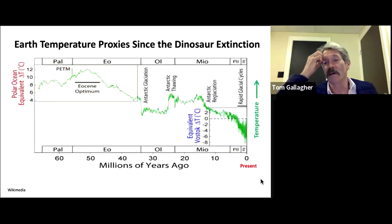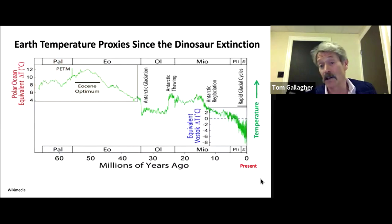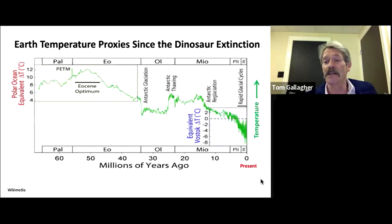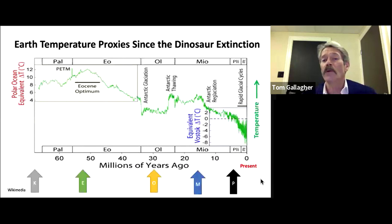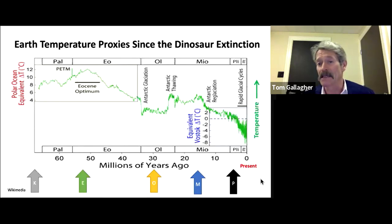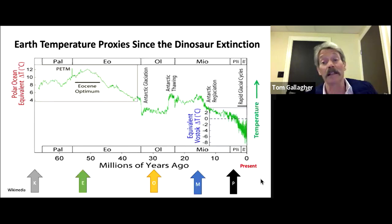Now let's focus on a period of time that spans between the death of the dinosaurs, 65 million years ago, and today. The graph, the green line, shows a total temperature fall of about 18 degrees Celsius during this period. This temperature fall is documented using fossil, isotopic, and ice core information. Note again some critical time periods: K, E, O, M, and P. We will address the relationship of temperature and polar ice mentioned on this slide a little bit later. The important take-home from this graph is the dramatic global temperature decline that the world is caught up in.